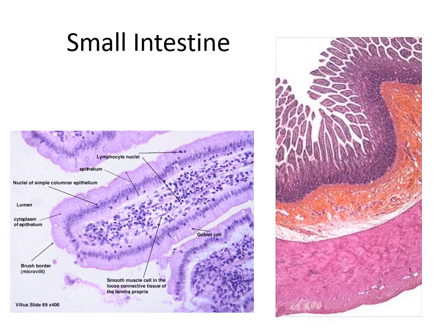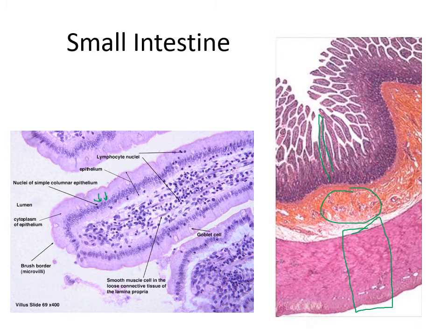Here are another couple of images. This one on the right simply used a different stain, that's why we're seeing different colors. Here's your muscularis externa, submucosa, mucosa with your villi. And on the left we have a close-up of a villus. Each one of these little tiny circles are individual nuclei of simple columnar epithelial cells. You can see these clear circles of goblet cells which are producing mucus. And on the inside of the villus — that area in there — is where we're going to find the capillary and the lacteal.